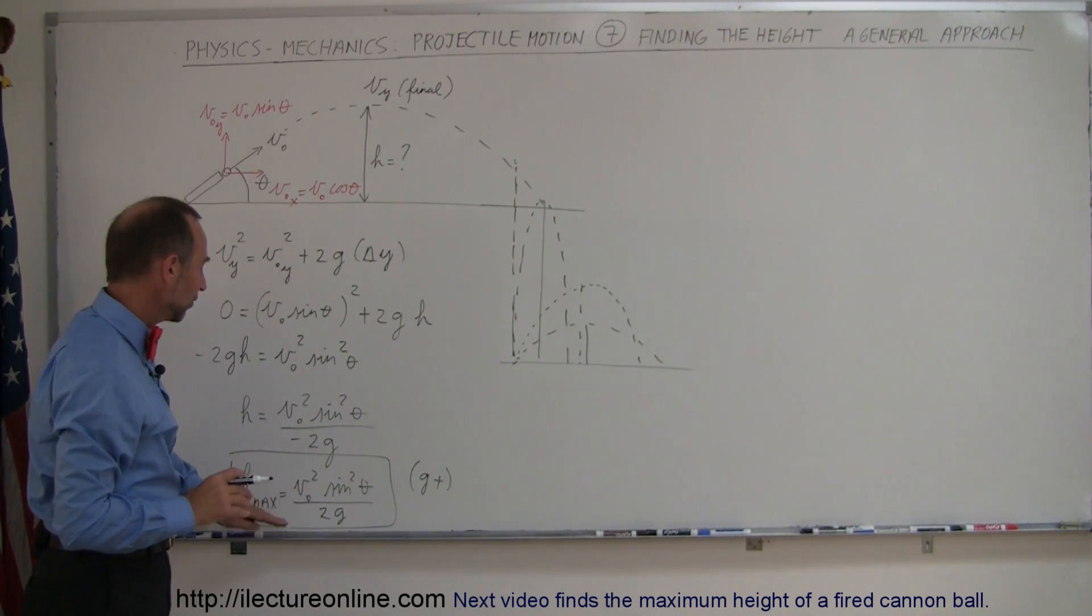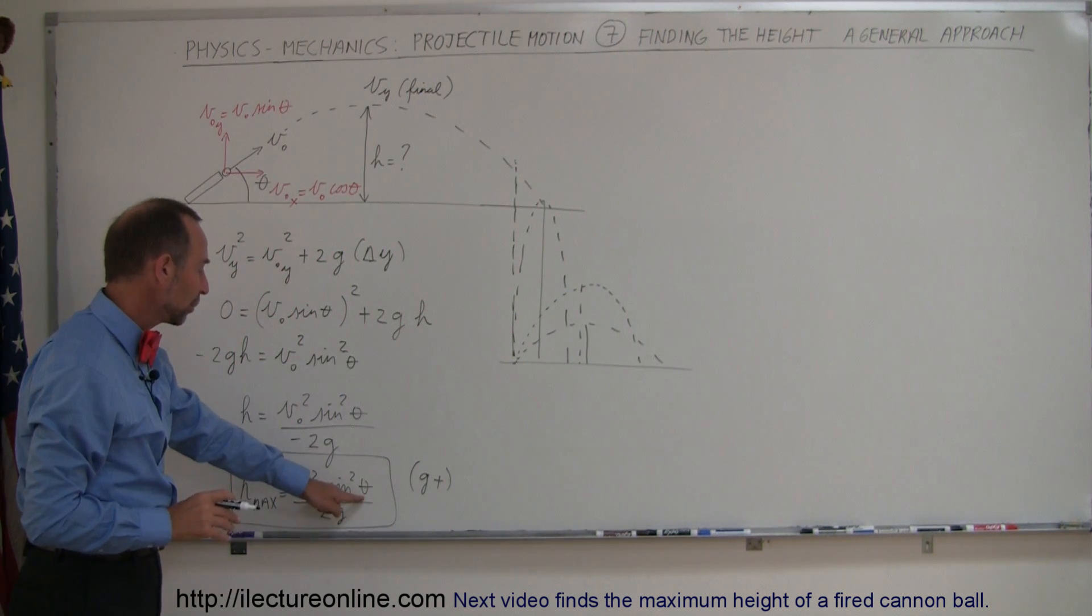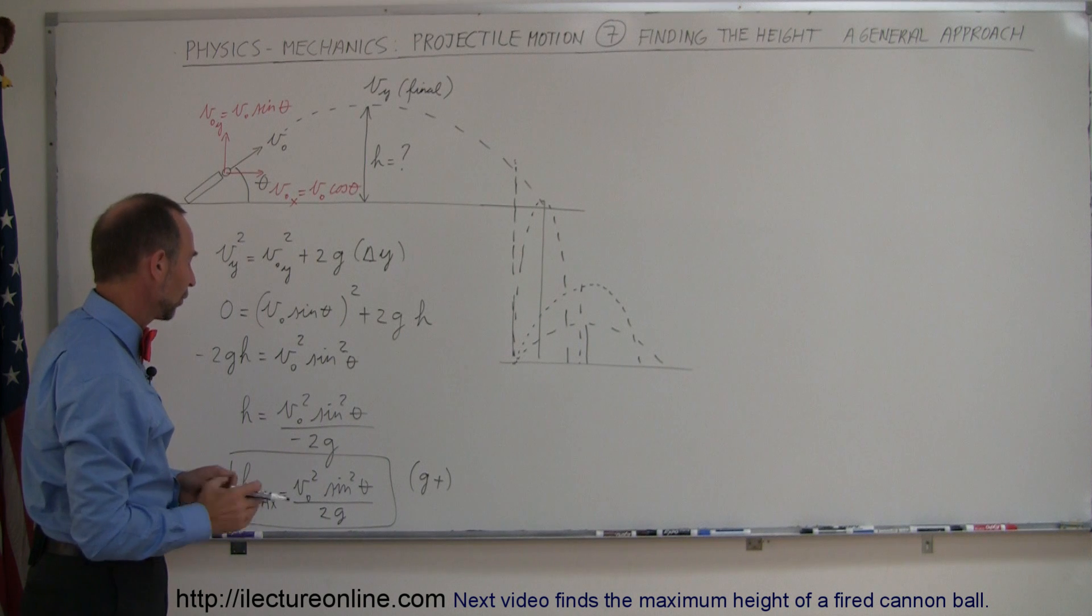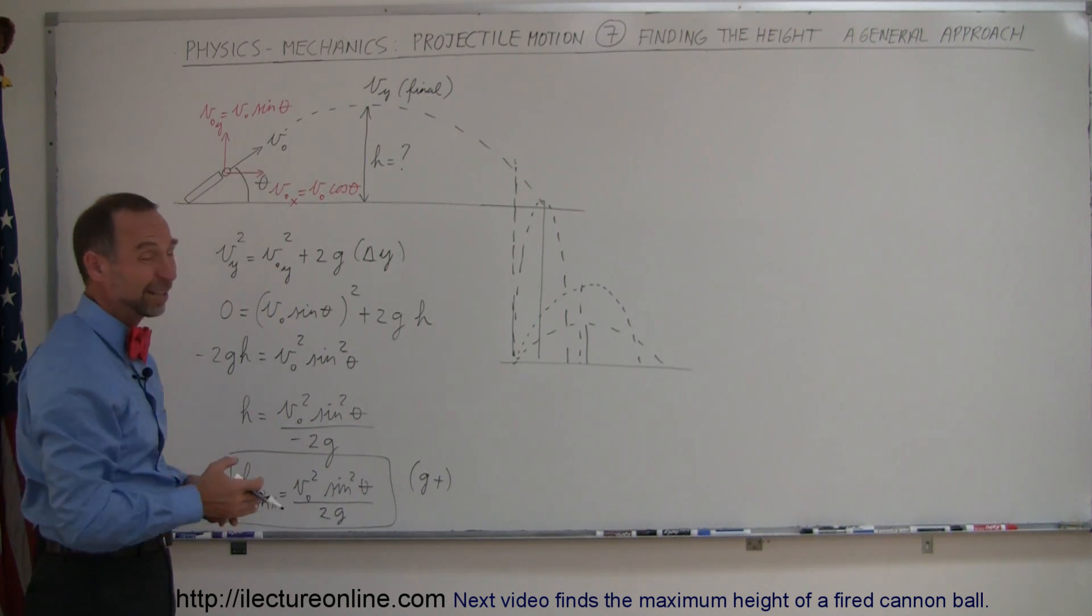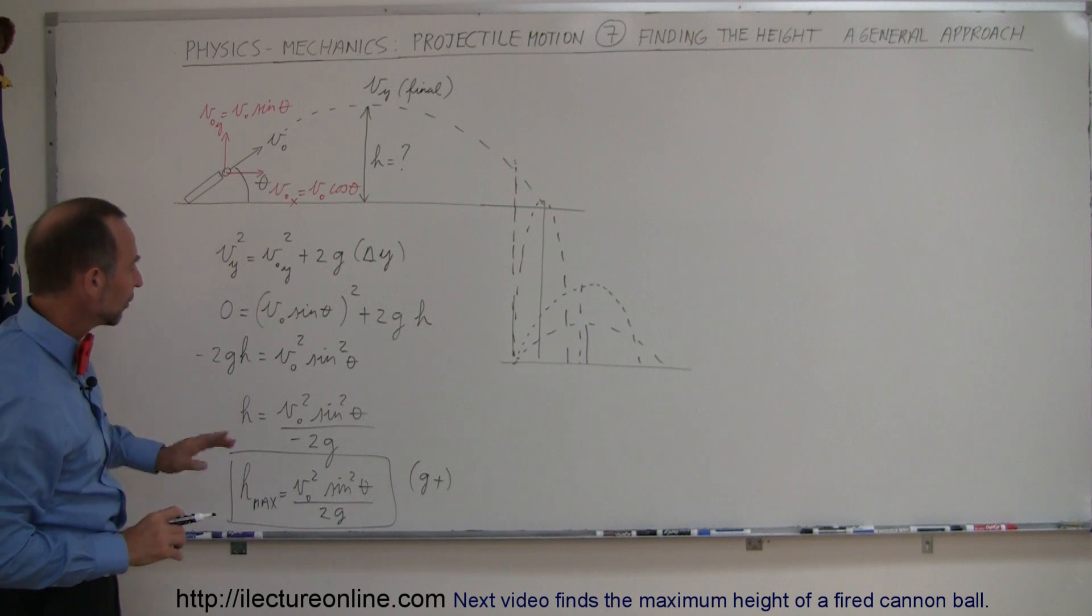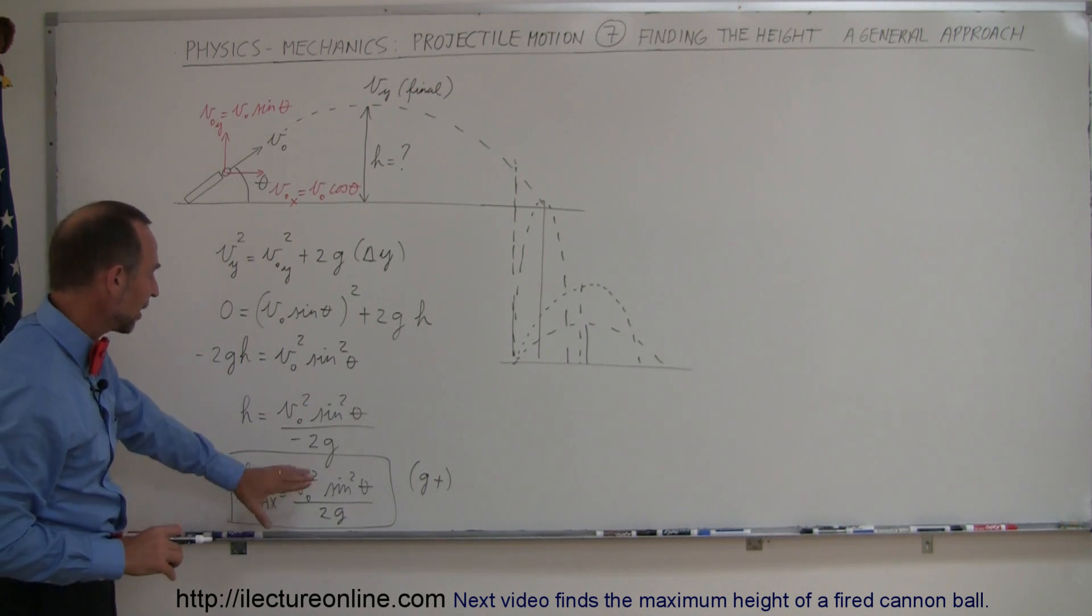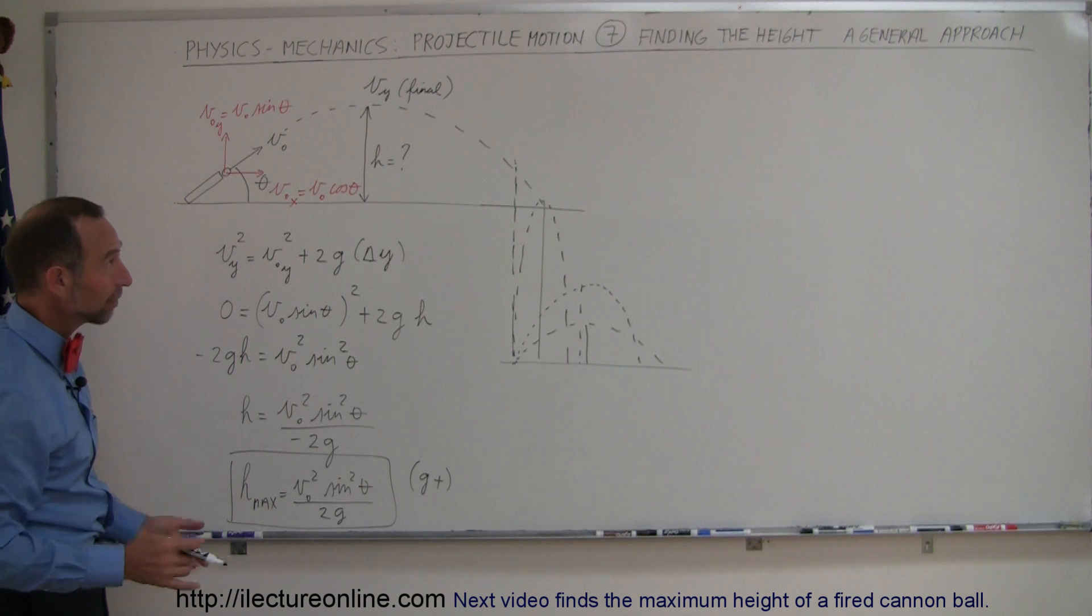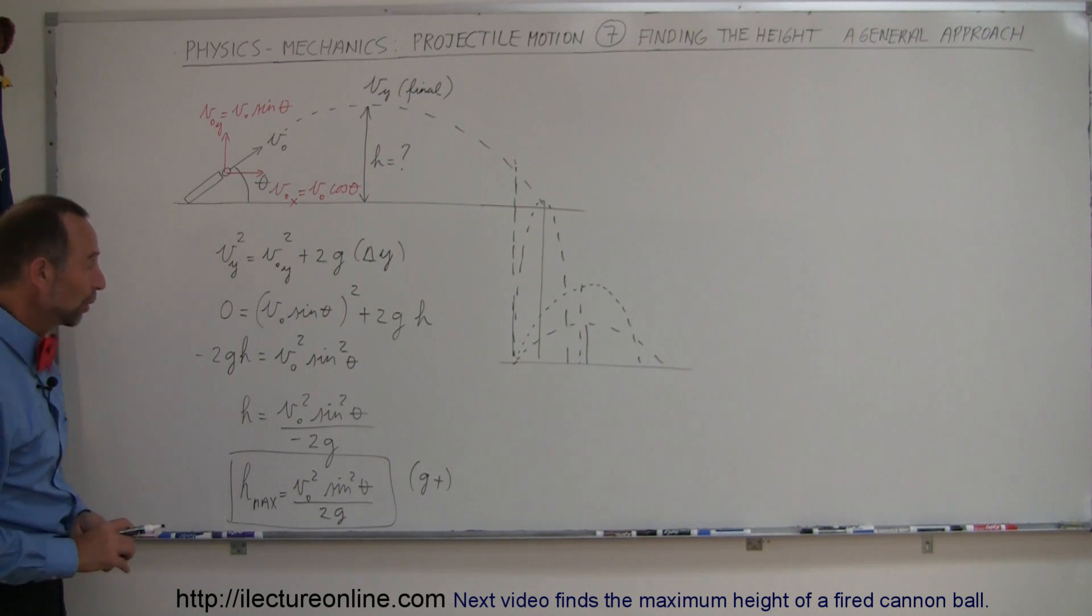So notice that, yes, it will go higher and higher if this angle approaches 90 degrees. But of course, in the end, it will go straight up and down, and you don't really gain any range. But no matter what the angle is, the maximum height will always be found by using this equation right here. And that's where you find the height in a general approach.